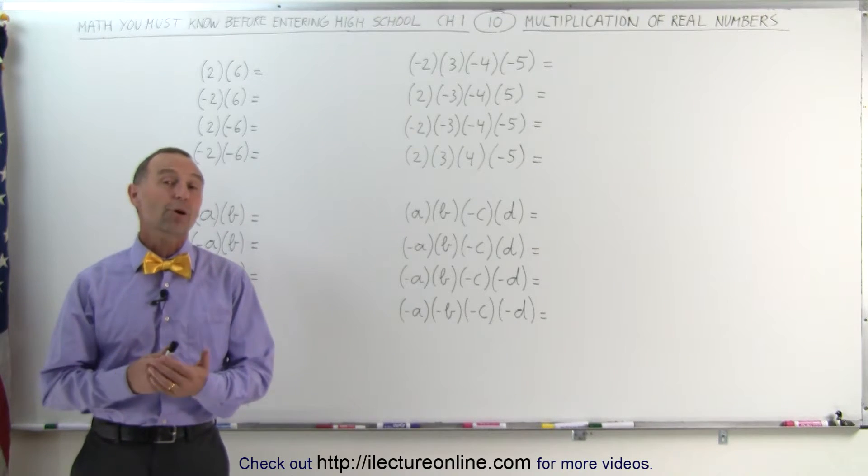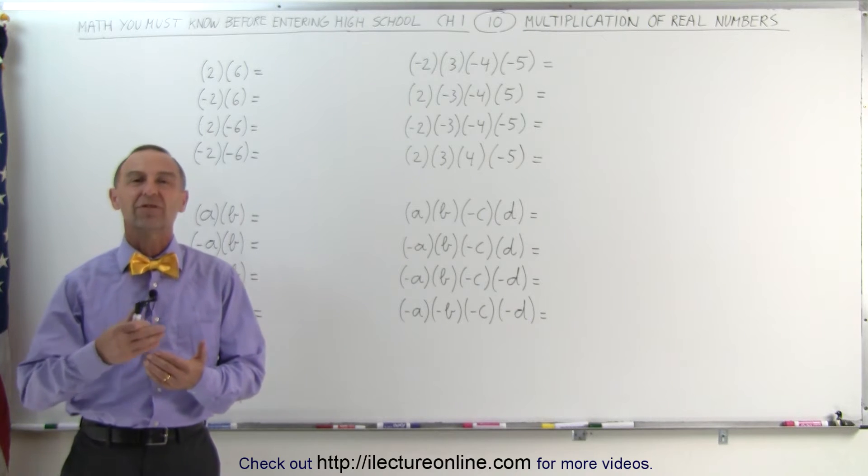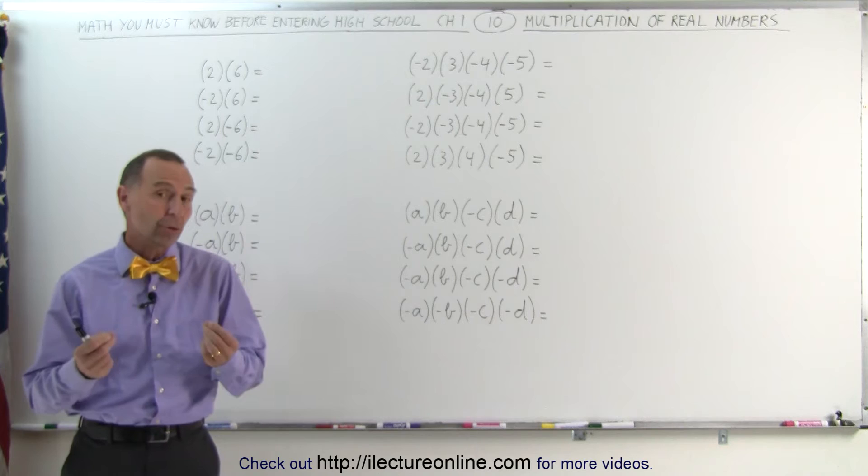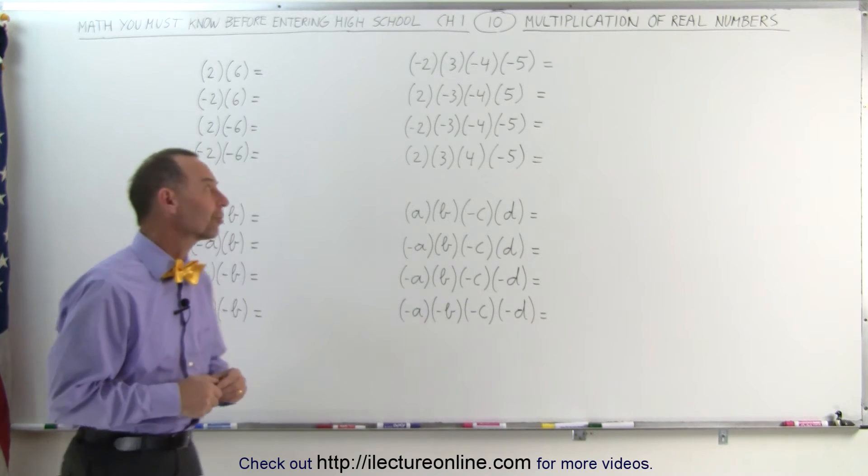Welcome to ElectroOnline. In this video, we're going to look at multiplication of real numbers, and in particular, the signs associated with them. What do you do when you multiply a positive and a negative number, or two negative numbers, or three negative numbers? Here are some examples to look at.